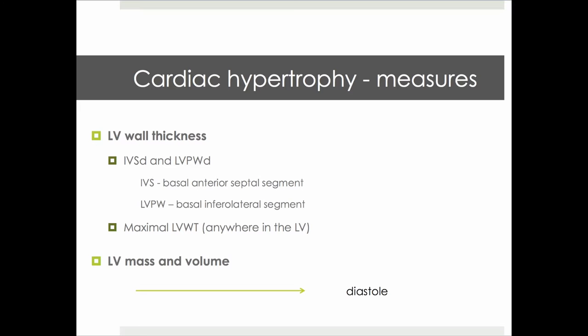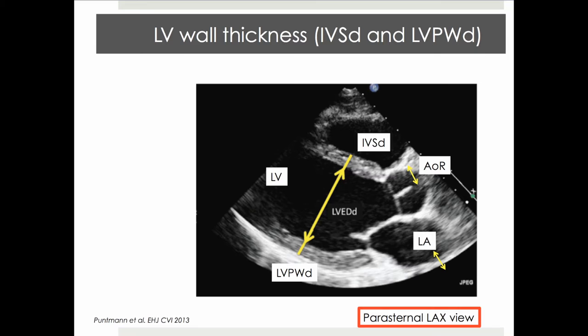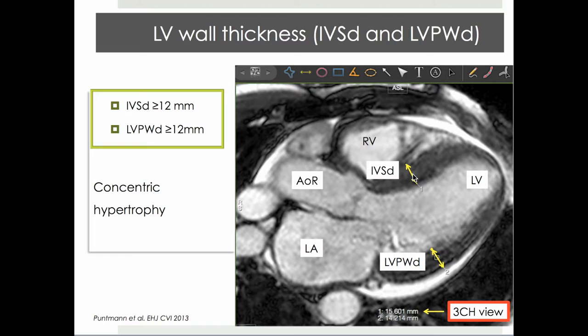Standard measurements of wall thickness mirror the approaches that are routinely employed in echocardiography. Measurements are obtained in the basal anteroseptal and basal inferolateral segment perpendicular to the long-axis continuity of left ventricular wall, corresponding to a rather old-fashioned and yet persistent echo nomenclature denoting thickness of interventricular septum as well as left ventricular posterior wall. Measurement of more than 12 mm of either of the two signifies an abnormally increased left ventricular wall thickness.